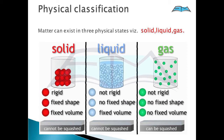Physical classification: matter can exist in three physical states — solid, liquid, and gas. Solid is rigid, has a fixed shape and a fixed volume. Can you name some solids? For example, apple, books.